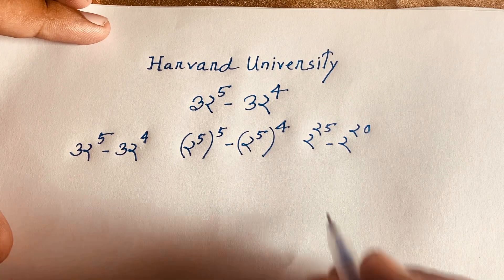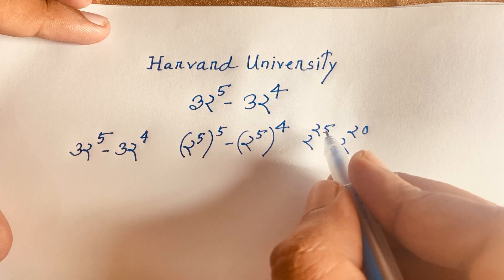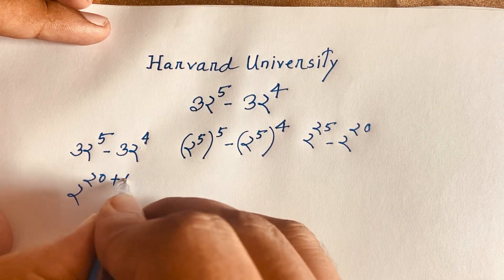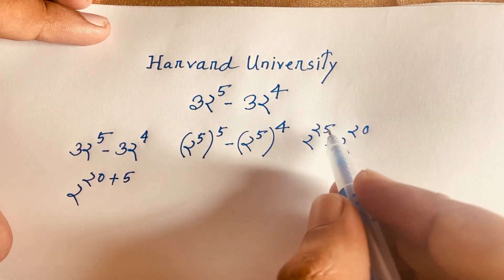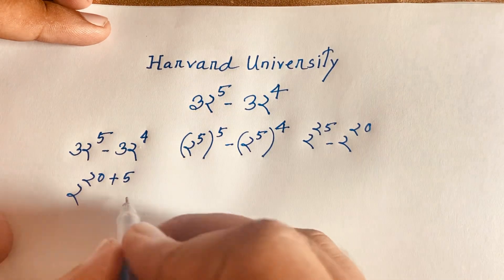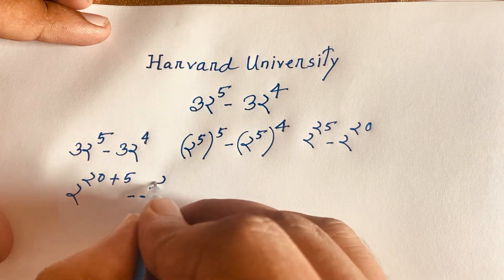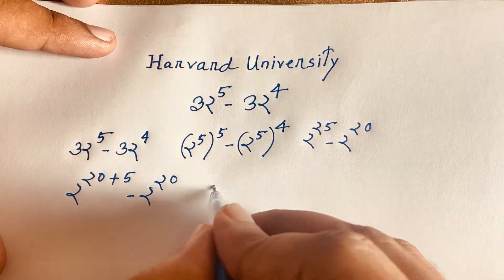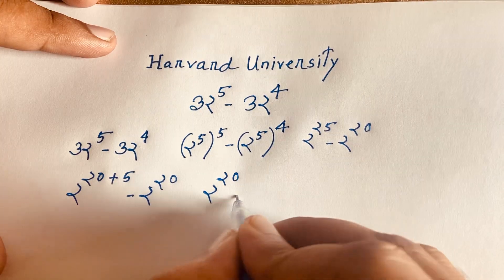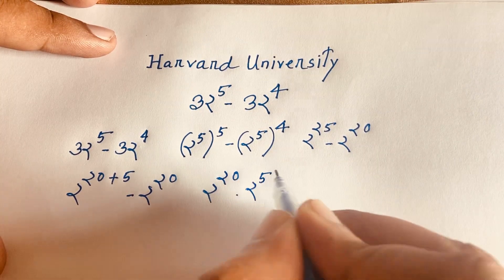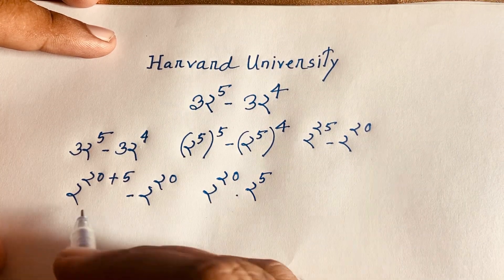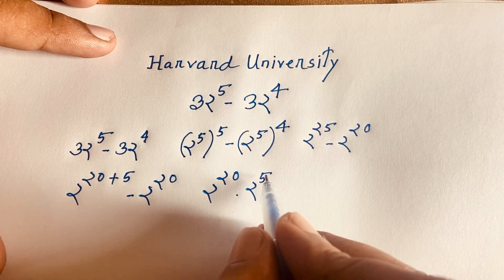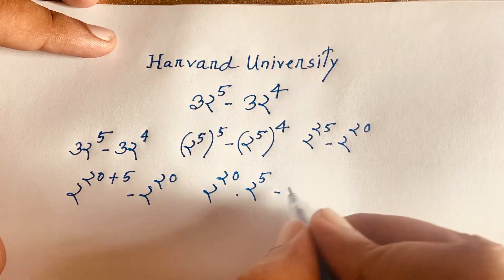According to exponential law, I can evaluate 2²⁵ as 2 to the power 20 plus 5, which equals 2²⁰ times 2⁵. The exponential law states that a to the power n plus m equals a to the power n times a to the power m. So the expression becomes 2²⁰ times 2⁵ minus 2²⁰.